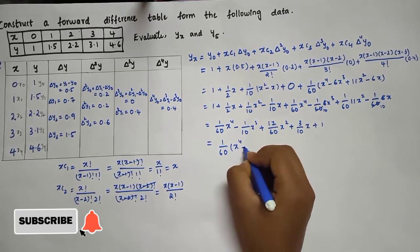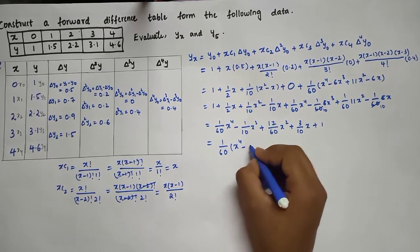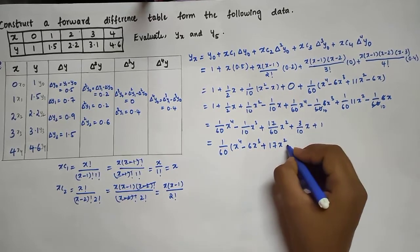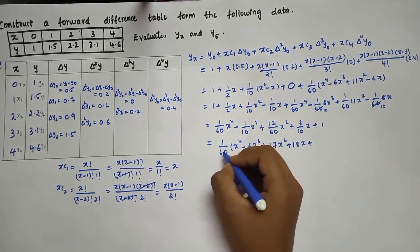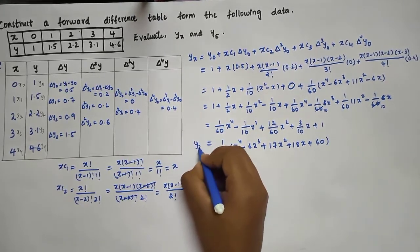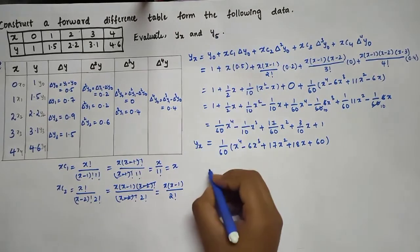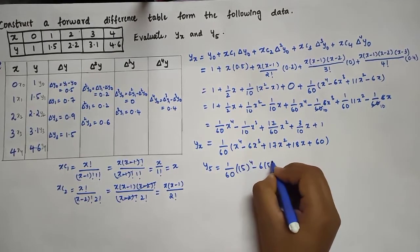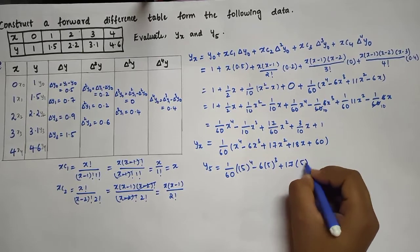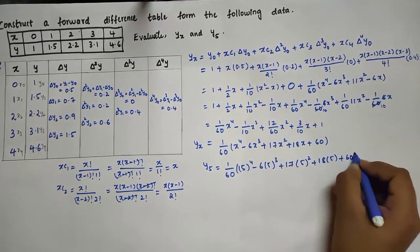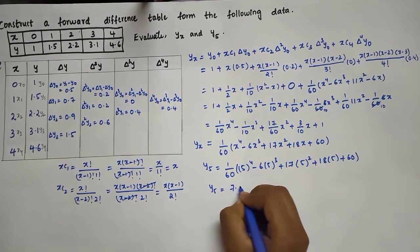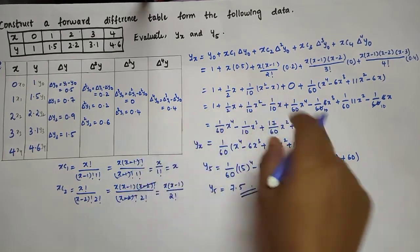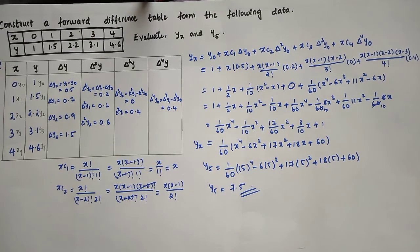Taking 1/60 as common, the final expression for y(x) is: (1/60)·(x⁴ − 6x³ + 17x² + 18x + 60). To find y(5), substitute x = 5: (1/60)·(5⁴ − 6·5³ + 17·5² + 18·5 + 60) = (1/60)·(625 − 750 + 425 + 90 + 60) = 7.5. So y(5) = 7.5. Thank you for watching; please like, share, and subscribe.